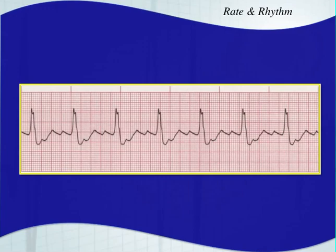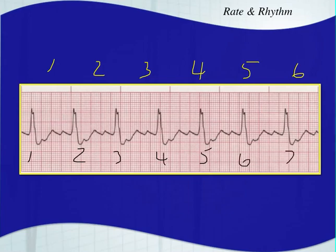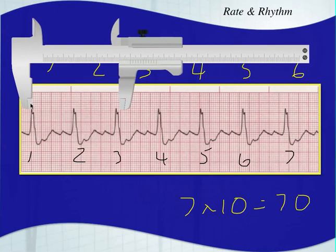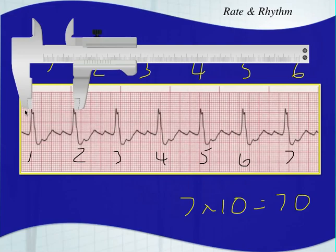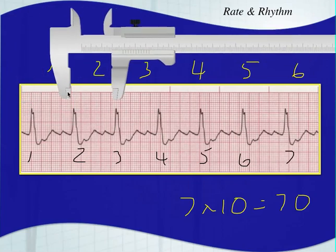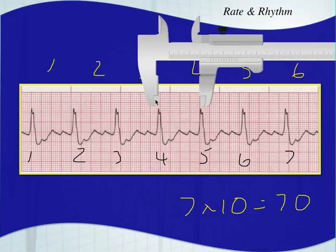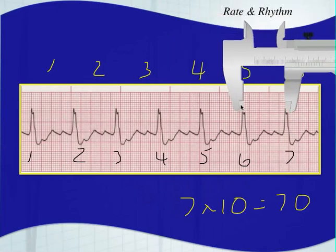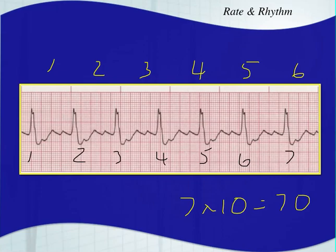Let's look at another one and determine both the heart rate and regularity. Using our six-second rule, we count the QRS complexes: one, two, three, four, five, six, seven — about seven. Seven times ten gives an estimated heart rate of 70. Let's also determine if this is a regular or irregular rhythm by taking a piece of paper or calipers and measuring between the first two QRS complexes, then comparing to the ones that follow. This stays very regular — we'd call this rhythm regularly regular.